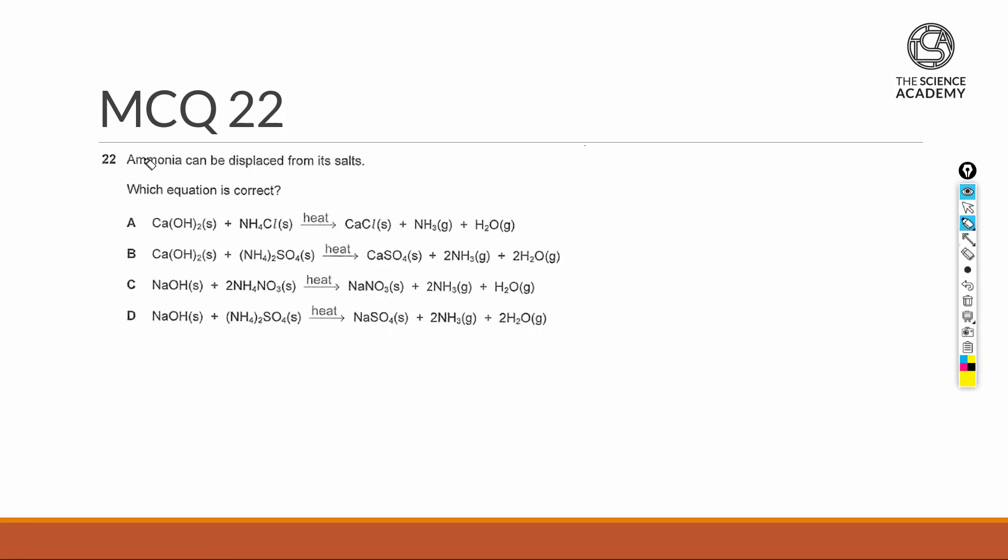MCQ22 asks which of the following equations causes ammonia to be released. As a big overview, ammonia at O level can largely be produced from three processes.